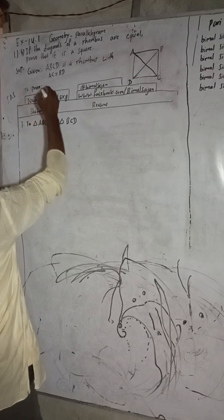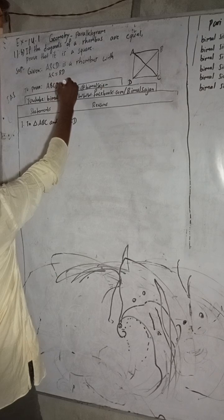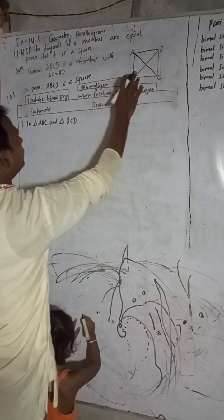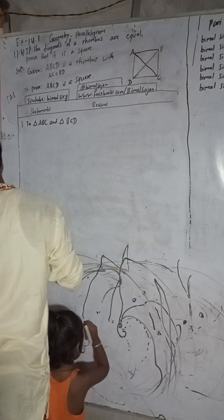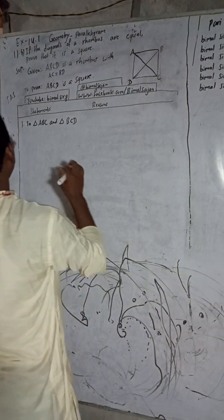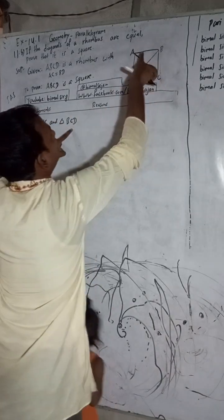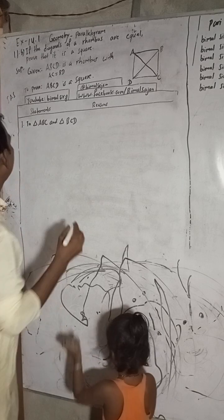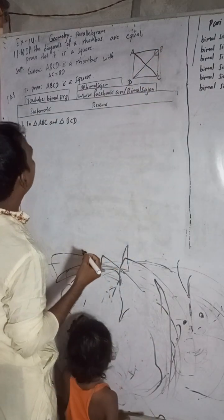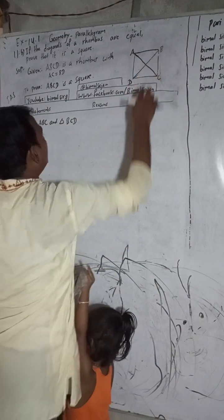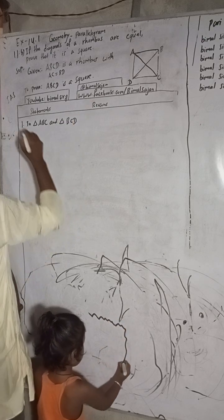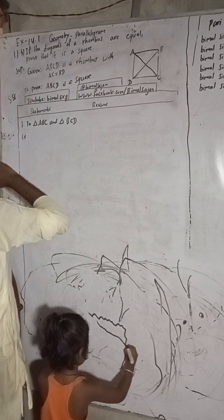Now to prove: ABCD is a square. To prove this is a square, first try to show two triangles congruent. Take triangle ABC and triangle BCD. We will solve by Side-Side-Side axiom, so we need to take the sides. In a rhombus, opposite sides are equal.